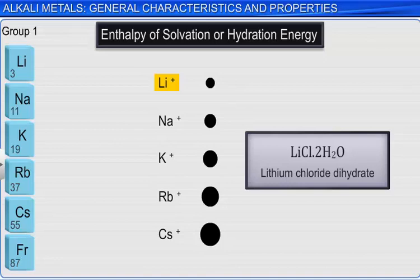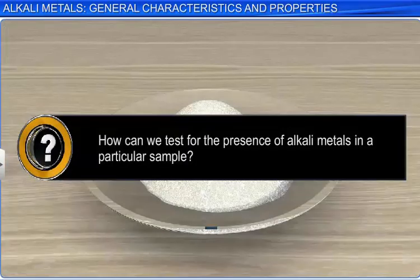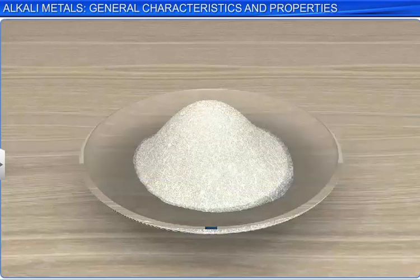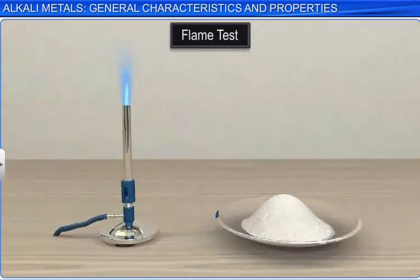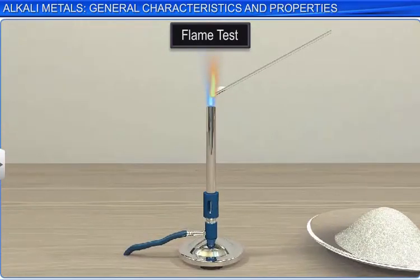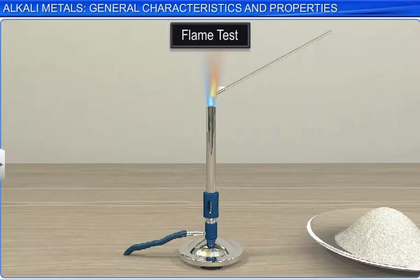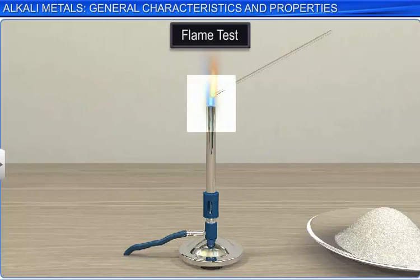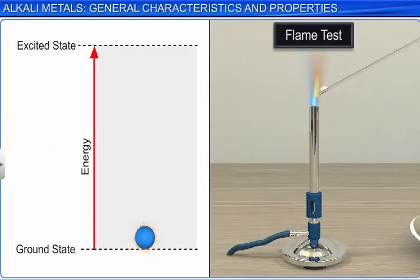How can we test for the presence of alkali metals in a particular sample? One simple and qualitative test is the flame test. If a small amount of a metal salt is held in a flame, characteristic color changes can be observed due to the movement of electrons. Electrons get excited to higher energy levels from the heat of the flame and emit energy as light as they return to their ground state. For a quantitative test, atomic absorption spectrometry can be used based on the same fundamental principles.